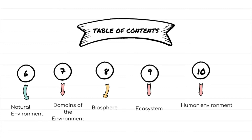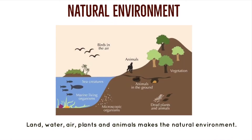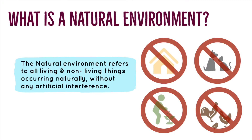Let us now understand what is a natural environment. You might think that the natural environment is land, water, air, plants and animals, but this is only half true. The natural environment refers to all living and non-living things occurring naturally without any artificial interference.